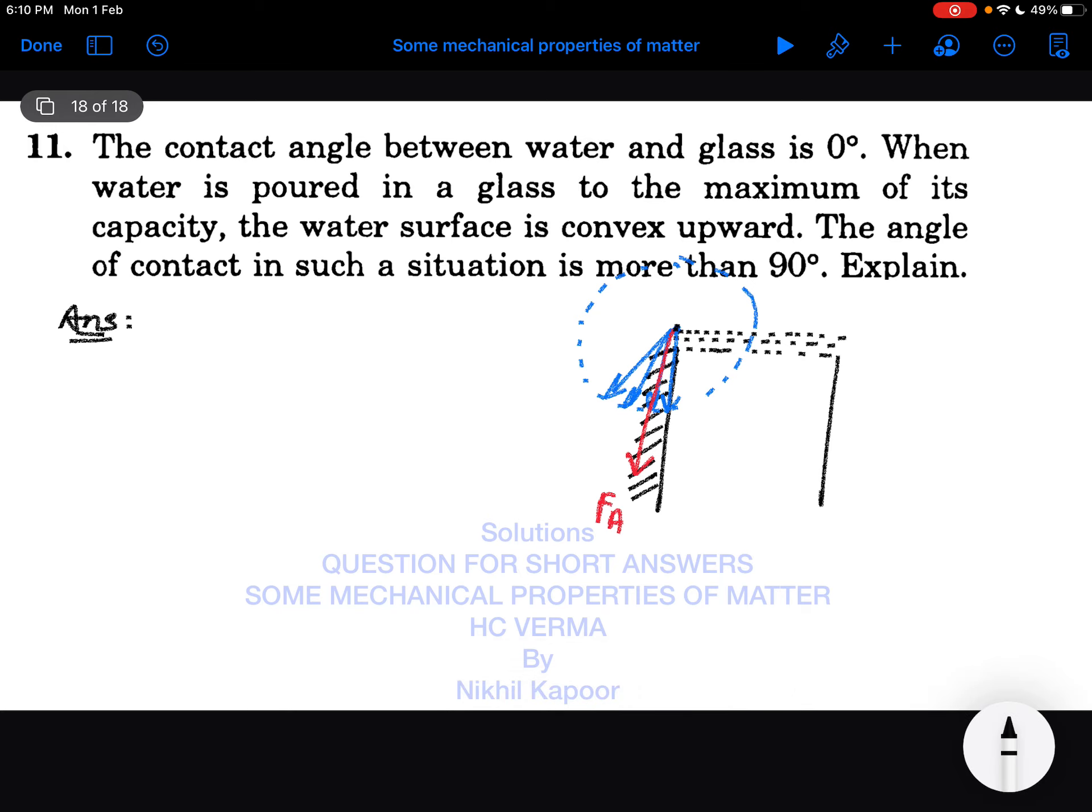Due to this, the water droplets will get attracted toward downward direction and the surface of water would be somewhat convex. The perpendicular to this line is tangent to the free liquid surface, and the angle between tangent and surface of solid becomes greater than 90.